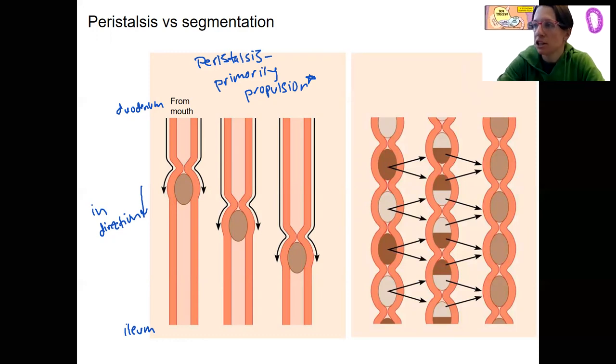So this here is segmentation. You can see the main thing is just that the smooth muscle contractions occur differently. What that means is we're going to have mixing happen. So this is primarily for mixing, so mechanical digestion.